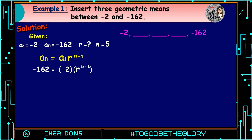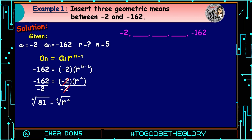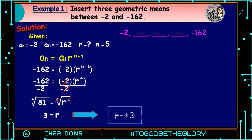So, negative 162 is equal to negative 2 multiplied by r raised to 5 minus 1, which equals 4. That gives us negative 162 equals negative 2 times r raised to 4. Dividing both sides by negative 2 to isolate r: negative 162 divided by negative 2 equals 81, and r raised to 4 equals 81. To solve for r, we extract the 4th root: the 4th root of 81 equals the 4th root of r raised to 4, giving r. The 4th root of 81 is 3, so r is equal to positive or negative 3. Note that we have two values of r.